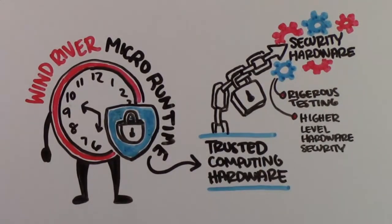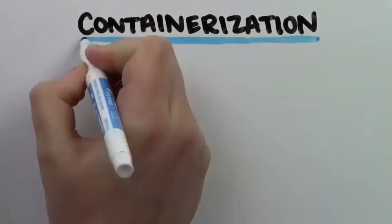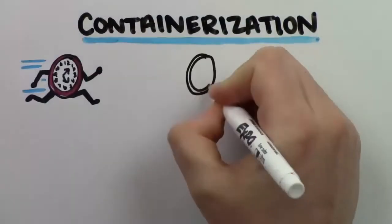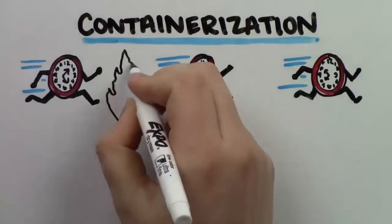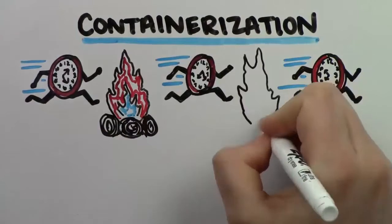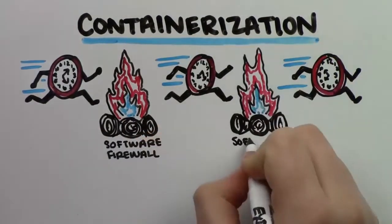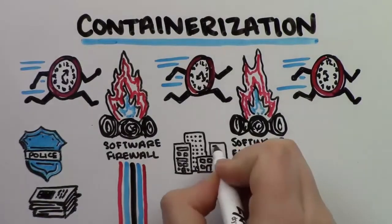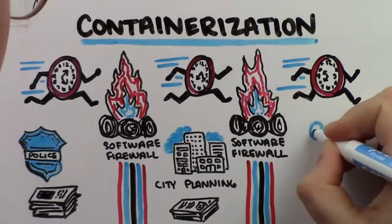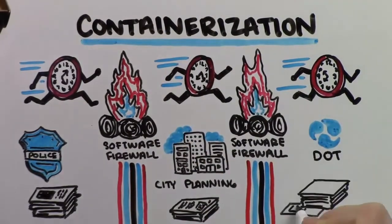Wind River Micro Runtime also offers another level of security with its containerization capabilities, which allows multiple instances to run simultaneously. Software firewalls between applications keep them uncompromised and separated from each other. This keeps the confidential police data separate from the City Planning Department's traffic volume data, all within the same platform in our streetlight example.